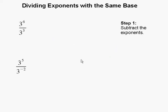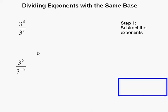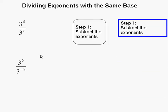Dividing exponents with the same base. In this problem we are going to divide exponents that contain the same base, and in this case our base is 3. Step 1: subtract the exponents. When we divide our exponents, the base remains the same, so the 3 remains the same throughout, and we simply subtract the exponents: 6 minus 3. That gets us 3, and the base remains the same.